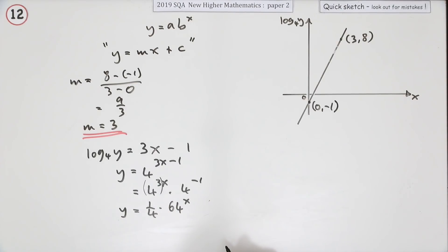And that in fact is your answer. What is a? a is a quarter. What is b? b is 64.